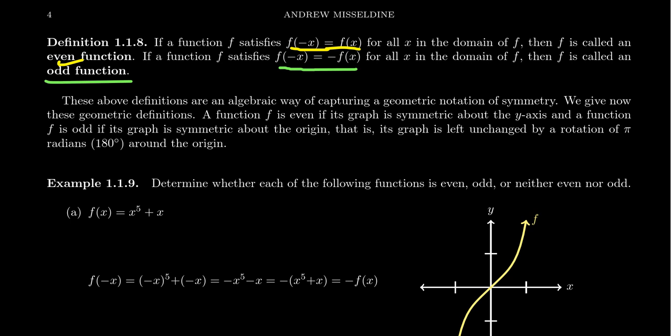Let me try to explain, one, why we have these names in the first place, and two, what's happening geometrically. These are algebraic identities: f of negative x equals negative f of x for odd functions, and f of negative x equals f of x for even functions.